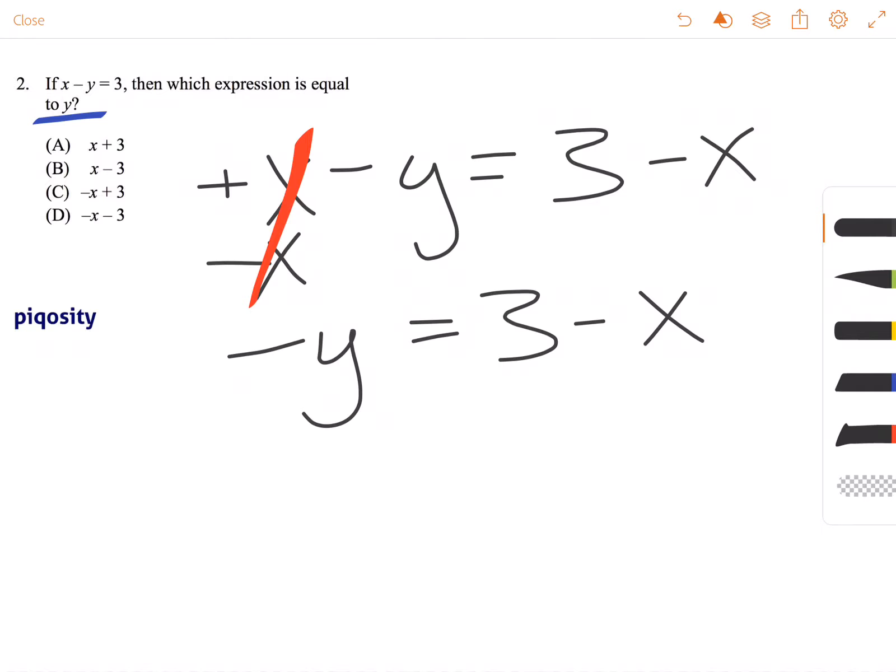Now, to get rid of this negative symbol, you have to remember, when you multiply a negative by another negative, so negative 1 times negative 1, you get a positive 1. So if we do that, multiply this side by negative 1,